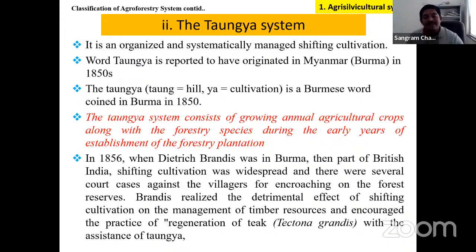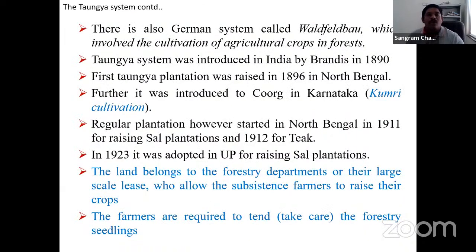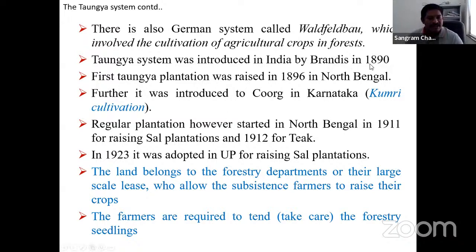The Taungya system was introduced in India by Brandis. Regular plantations were started in North Bengal under Taungya, mainly with teak and sal grown under Taungya plantations. There are three types of Taungya: Departmental Taungya, Leasehold Taungya, and Village Taungya.